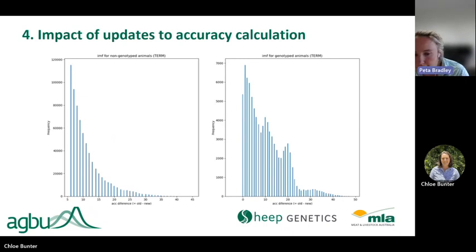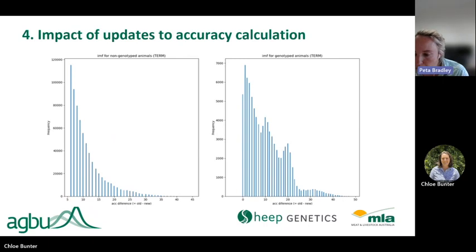In summary, it was a necessity to implement this enhancement as we'd been previously overinflating the accuracy figure reported alongside the breeding value as a result of the genomic information used for these multi-breed evaluations. Going forward, the new accuracy better reflects the information that's contributing to the animal's breeding value.